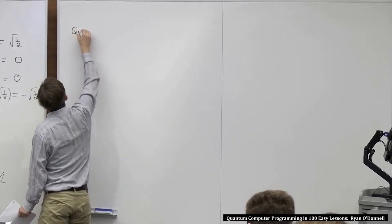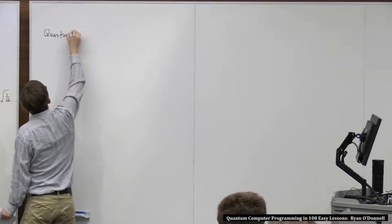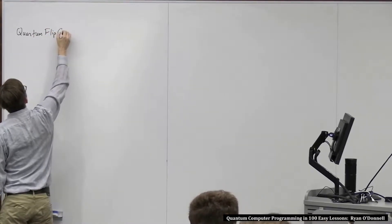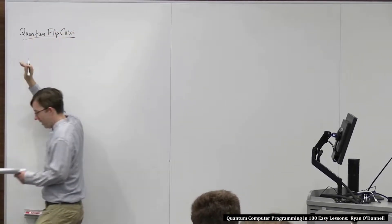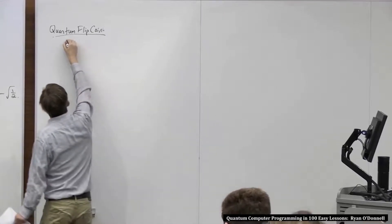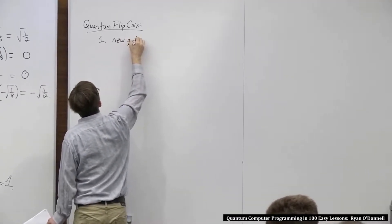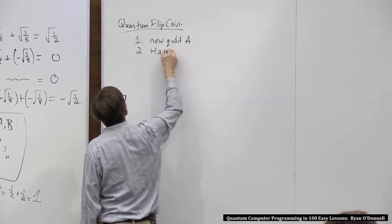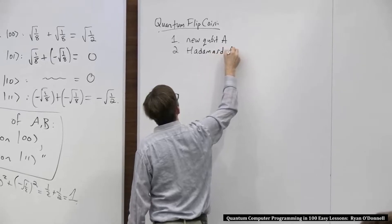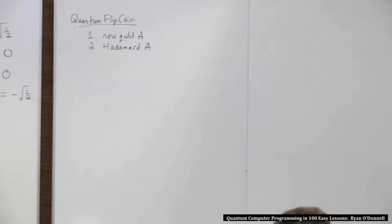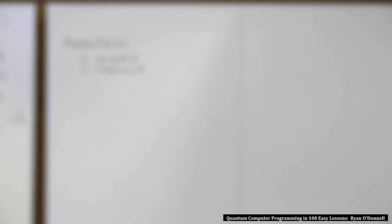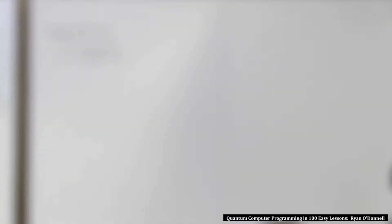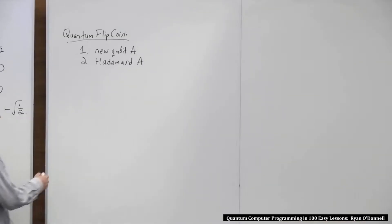Maybe this one I'll call quantum flip coin. But don't take the names of these subroutines too seriously. And this will just be like new qubit A, Hadamard A. This is literally only one instruction, so it's a bit overkill to draw the whole tree for it. We're just going to figure out what is the final state.